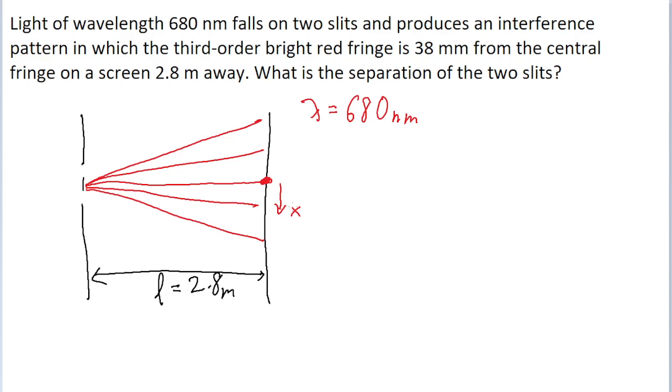So for whichever fringe or point of interference we're looking at, I'm defining x to be the distance between the central point and that fringe. I'm also defining theta to represent the angle of that fringe from the central point.